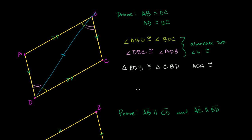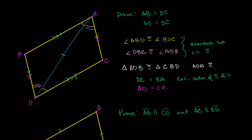If two triangles are congruent, then all of the corresponding features are congruent. In particular, side DC on the bottom triangle corresponds to side BA on the top triangle, so DC equals BA. And by the same logic, AD corresponds to CB, so AD equals CB. These are corresponding sides of congruent triangles. We've proven that opposite sides are congruent.